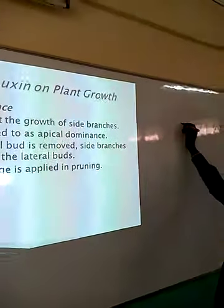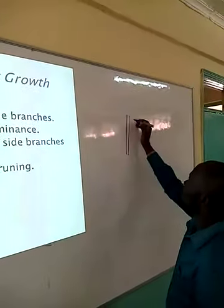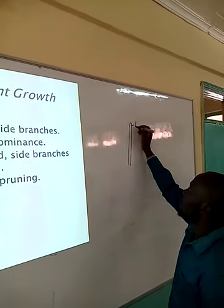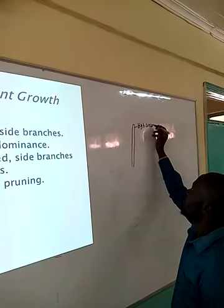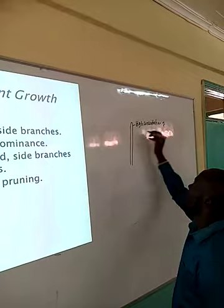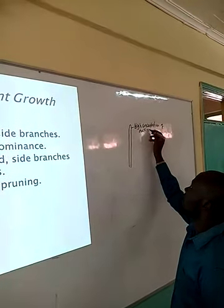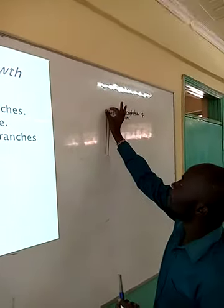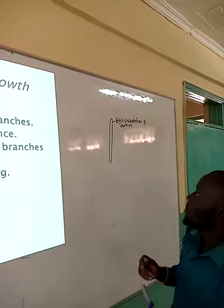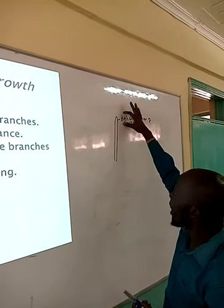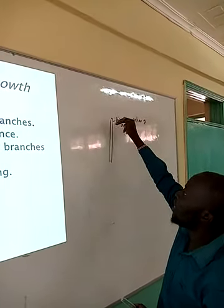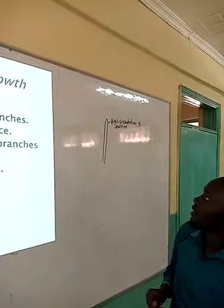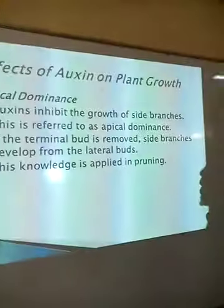So if we have a plant that is growing like that, and most of the auxins are concentrated at the apex — a high concentration of auxins there — when talking about apical dominance, the apex dominates at the expense of the side branches. Because of the high concentration that increases the growth of the apex, that high concentration will hinder the growth of the side branches. That is what we are calling apical dominance.